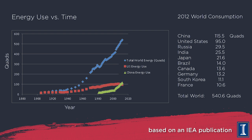If you want everyone to have a first-world standard of living, we're going to need a lot more energy. Looking at China specifically: over the last few years, China has overtaken the United States as the world's largest consumer of energy. Their number for 2012 was 115.5 quads, and unlike the US which is flat in its energy use, China's energy use is going up at an extremely fast rate.